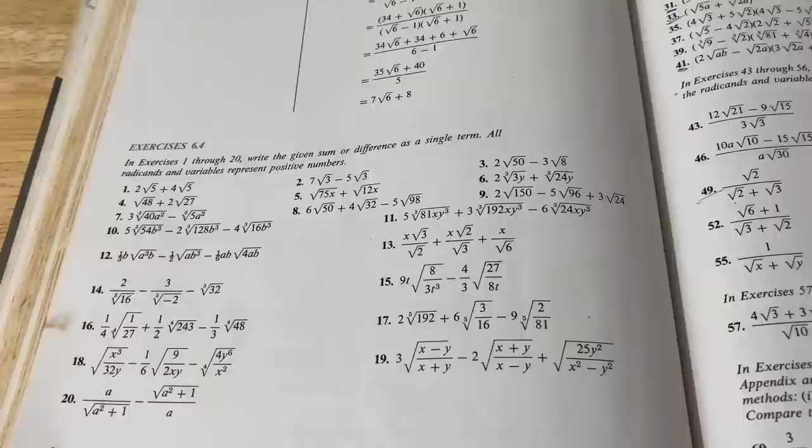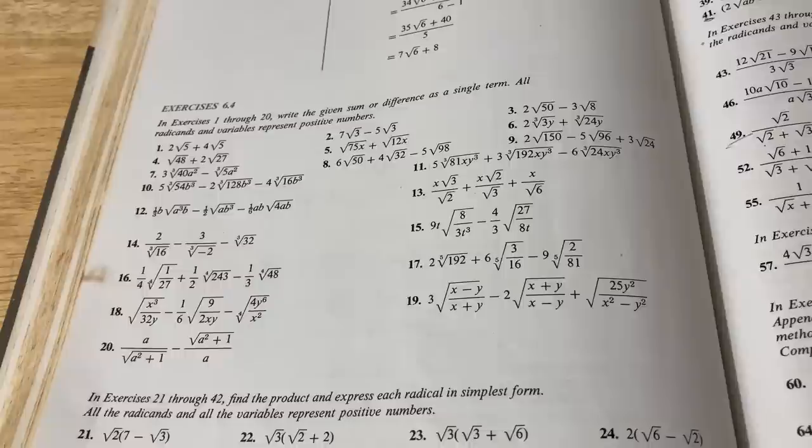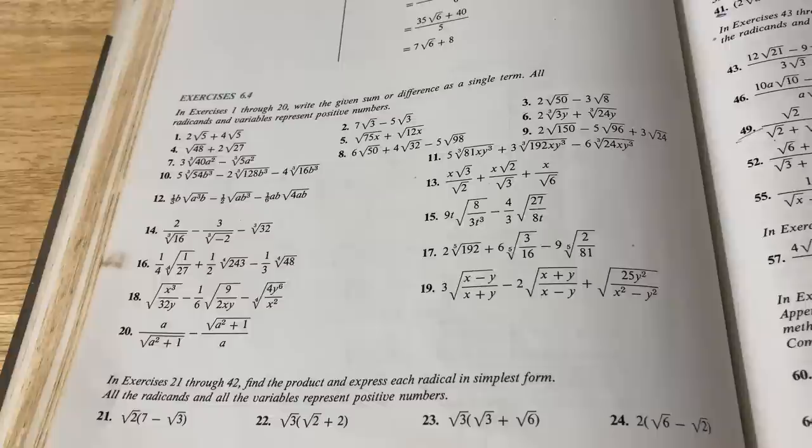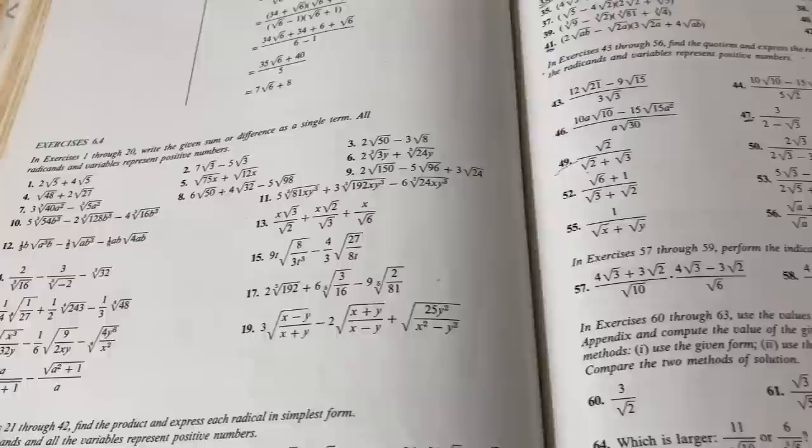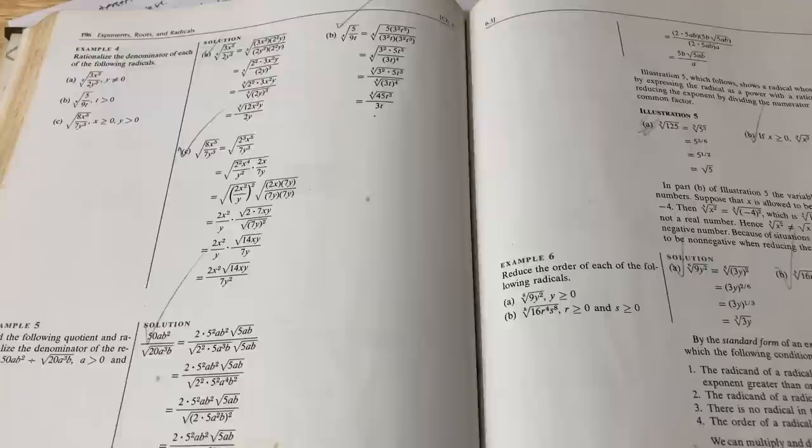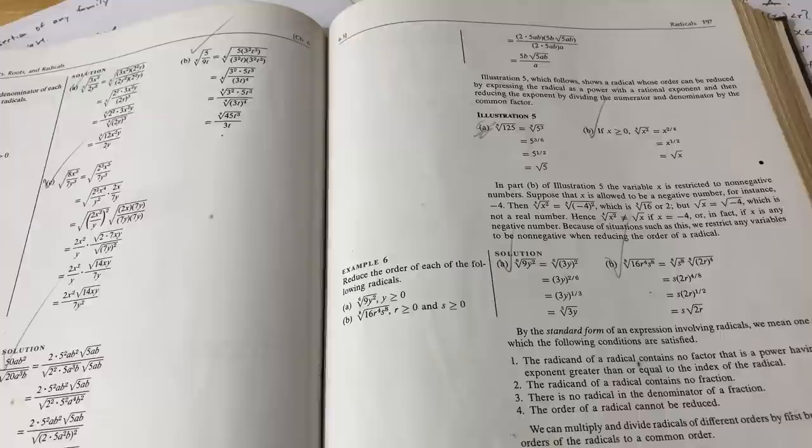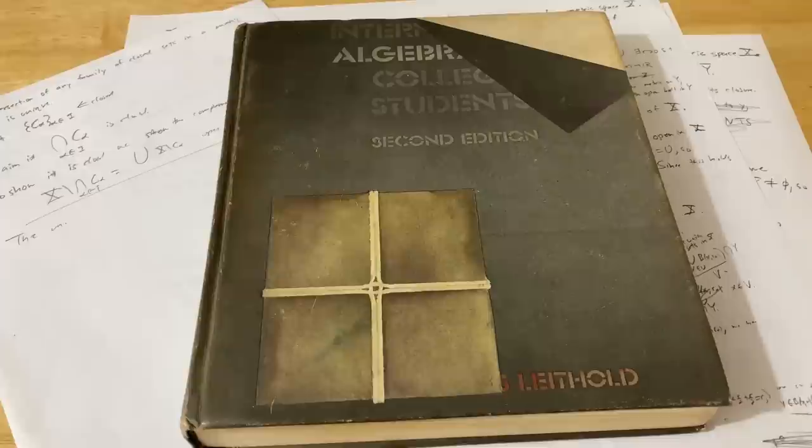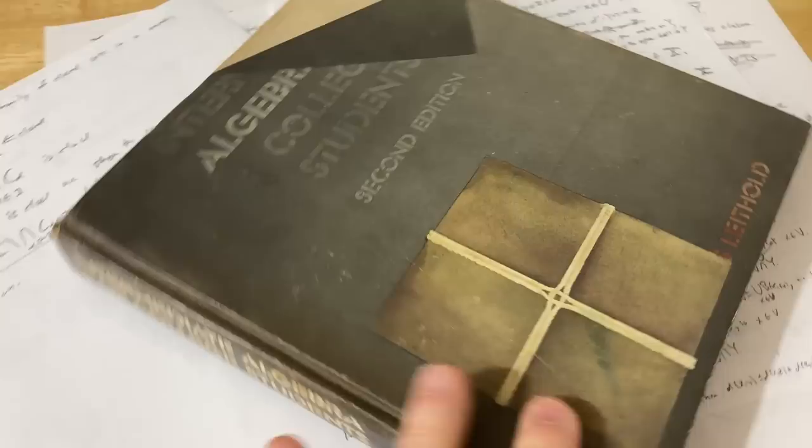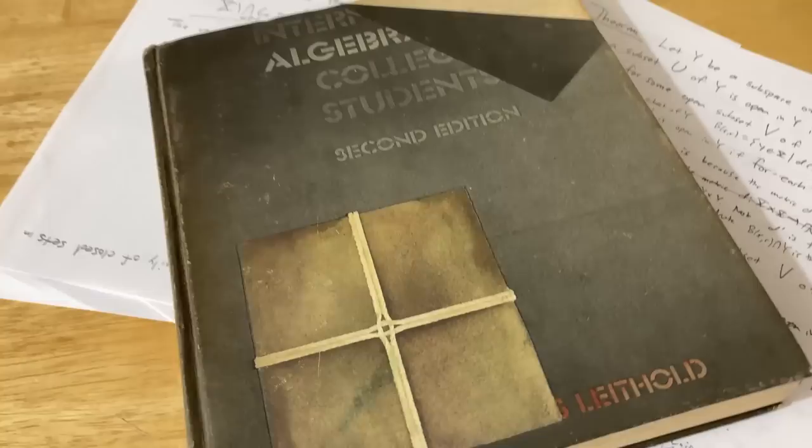This book also has tons of exercises, and it has answers to the odd-numbered problems in the back. What I especially like about this book, though, is that some of the exercises are a little bit different from the modern books. The other books I showed you are newer, and this book is much older, so some of the exercises are different, and for me, that makes it a little more exciting. I've read various portions of this book, and I've worked through tons of the examples and tons of the exercises, and I think it has great explanations. I really like this book. The biggest downside of this book is that it is very hard to get, and if you can find it, it might be very expensive, and that's because it's out of print, and it was written by Lighthold, so a very hard book to get, but if you can get it, I think it's worth it.